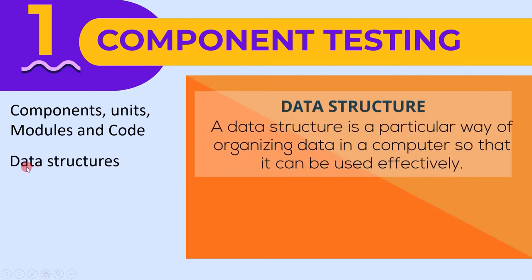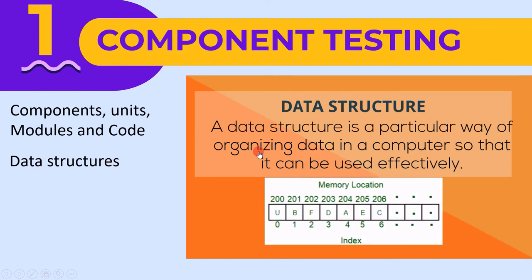The second test object is data structure. A data structure is a particular way of organizing data in a computer so that it can be used effectively. For example, we can store a list of items having the same data type using the array data structure. With this information, we can manipulate the data and check how a component behaves.